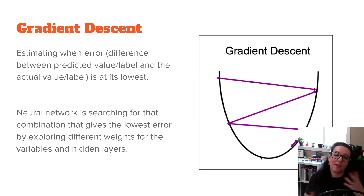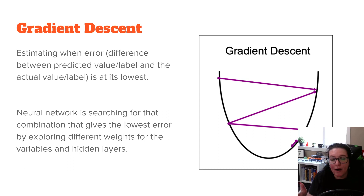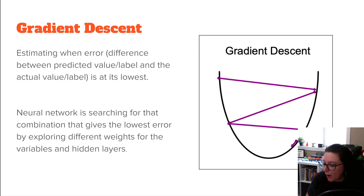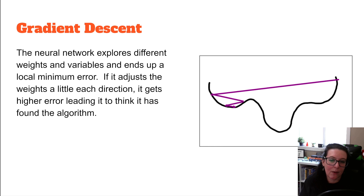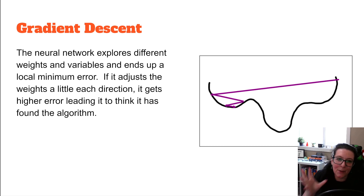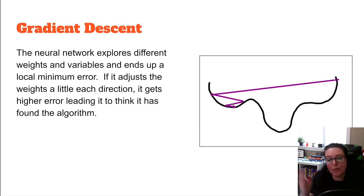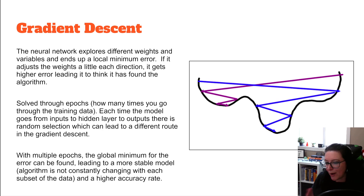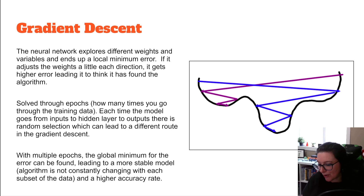Think of it as changing the design of our forecasting model to find the variation with the least amount of error — the most accurate, where each predicted data point is close to the actual. The challenge is we can get stuck in local minimum errors. By using LSTM, we have more hidden layers built into our process to help avoid getting stuck. The epochs also help us find the global minimum and a higher accuracy rate.